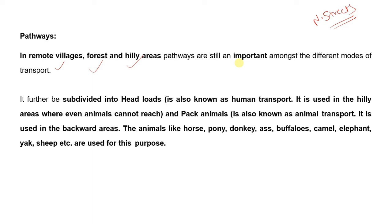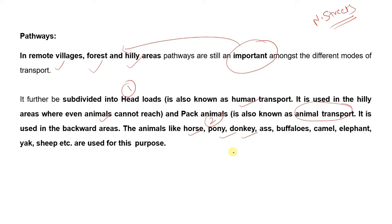Pack animals are also called animal transport. They are used in backward areas. In pack animal transport, animals like horse, pony, donkey, buffalo, camel, elephant, yak, and sheep are used. So, pathways are used in remote villages, forest areas, and hilly areas. Head loads means human transport where animals cannot reach, and pack animals means animal transport where horses, ponies, and donkeys are used.